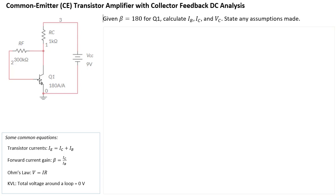So as usual, before we start, we need to label our currents and voltages so that we know which side is positive and therefore form our equations properly. Looking at the currents, the first thing we have is this current coming down that vertical — that's going to be IC because it is going into the collector.